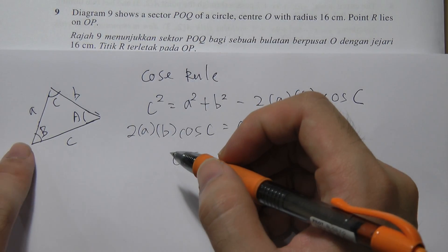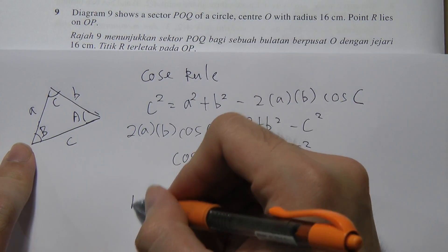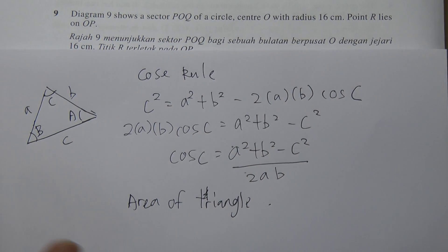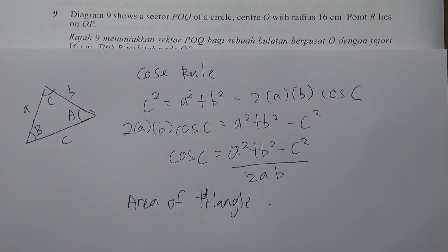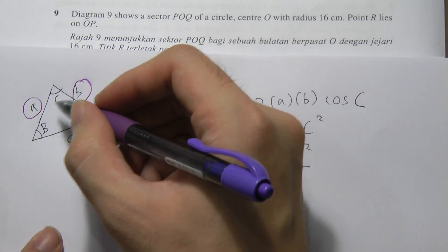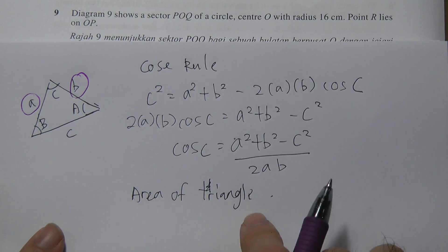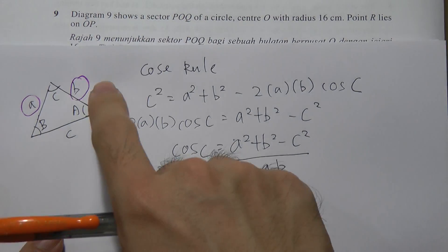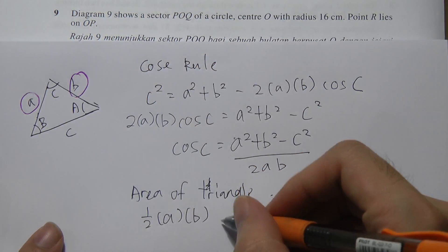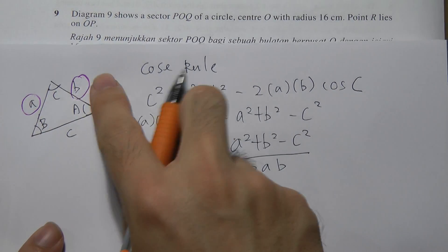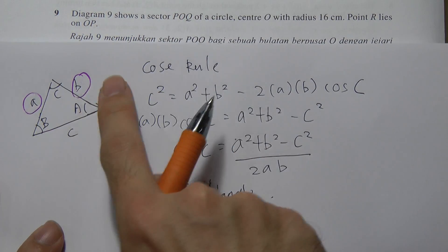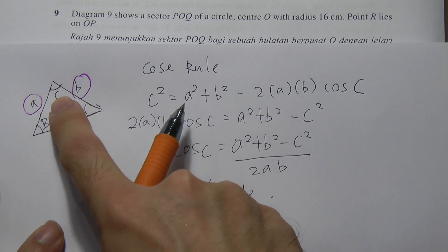At the same time, there is a very similar formula for the area of a triangle. Like the cosine rule which uses two sides and the angle between them, the area formula is: Area = ½ × a × b × sin C, where C is the angle between sides a and b.